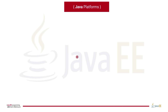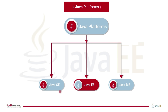Java has three basic platforms. The first one is Java SE, which we can use to build desktop applications. The second platform is Java EE, which we will cover throughout this course — we use it to build web and enterprise applications. The third platform is Java ME, which we use to build mobile applications.